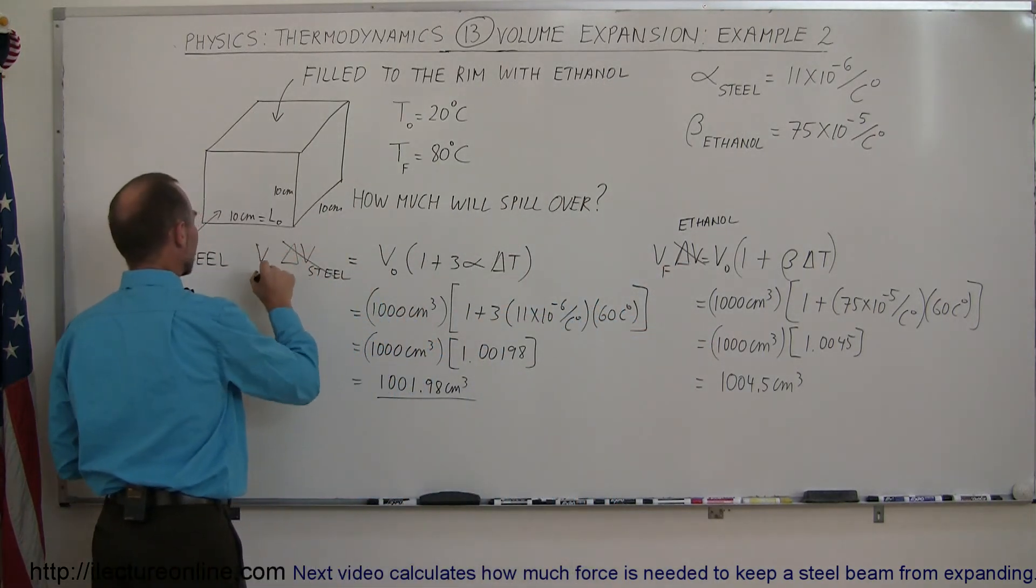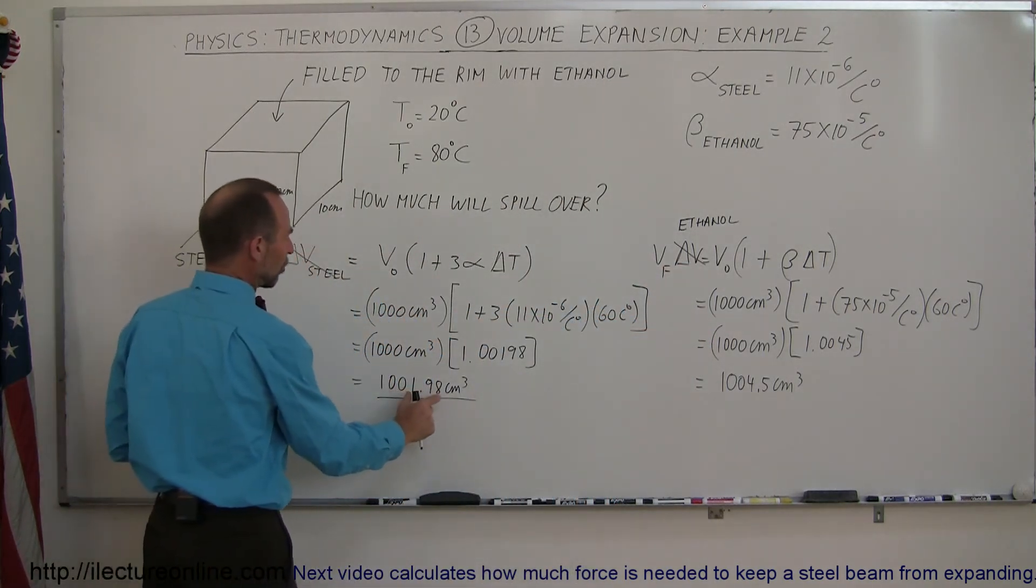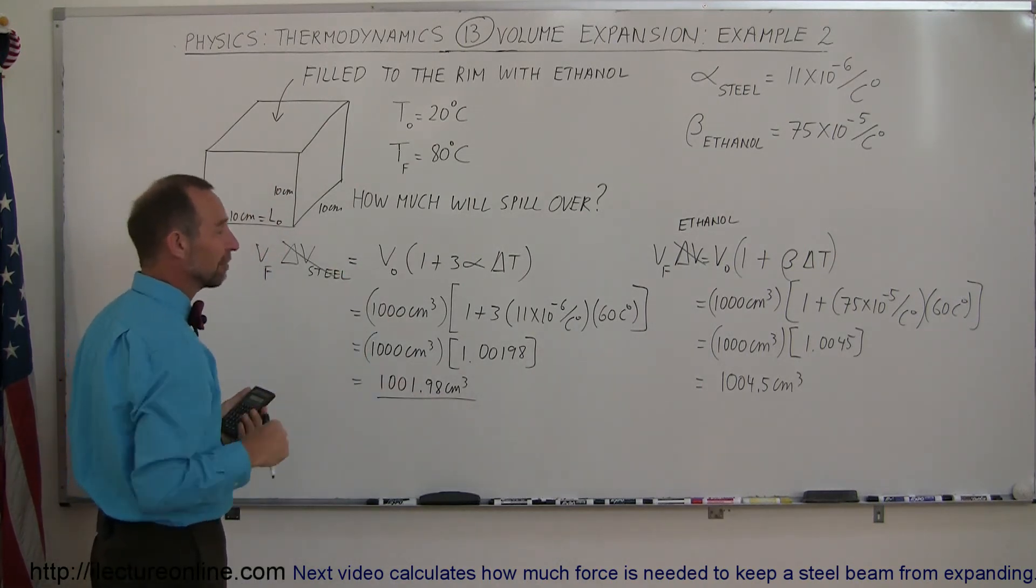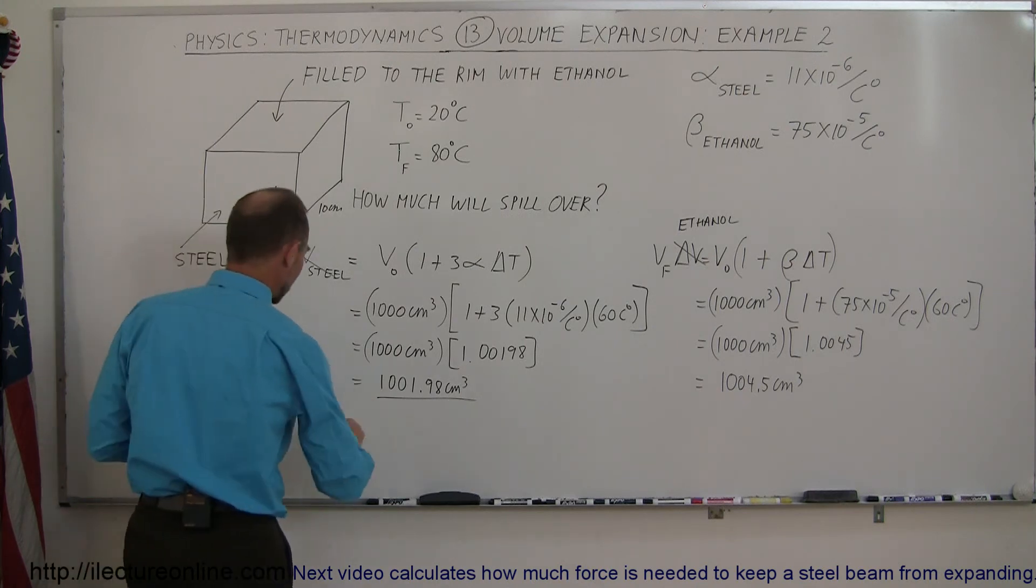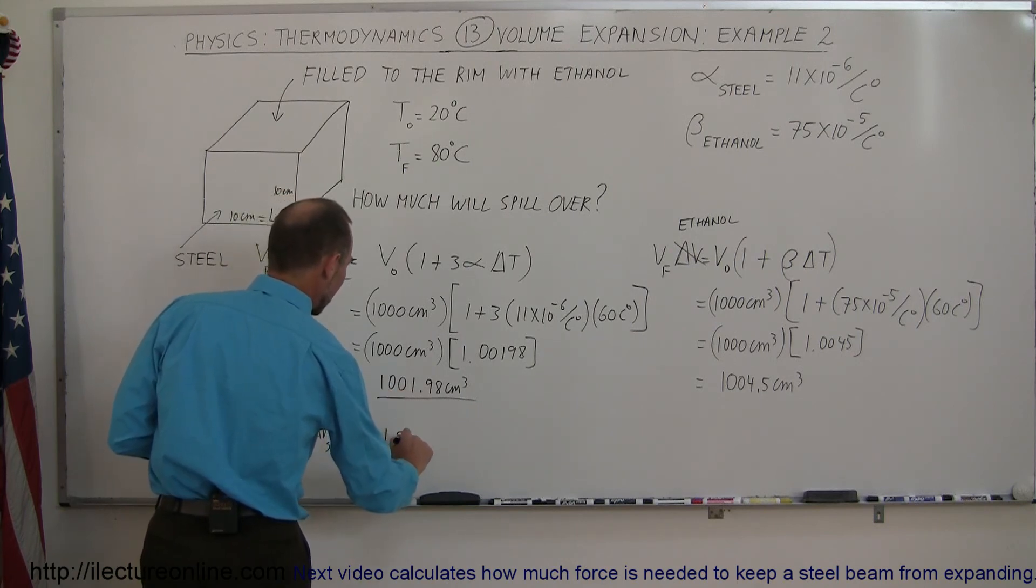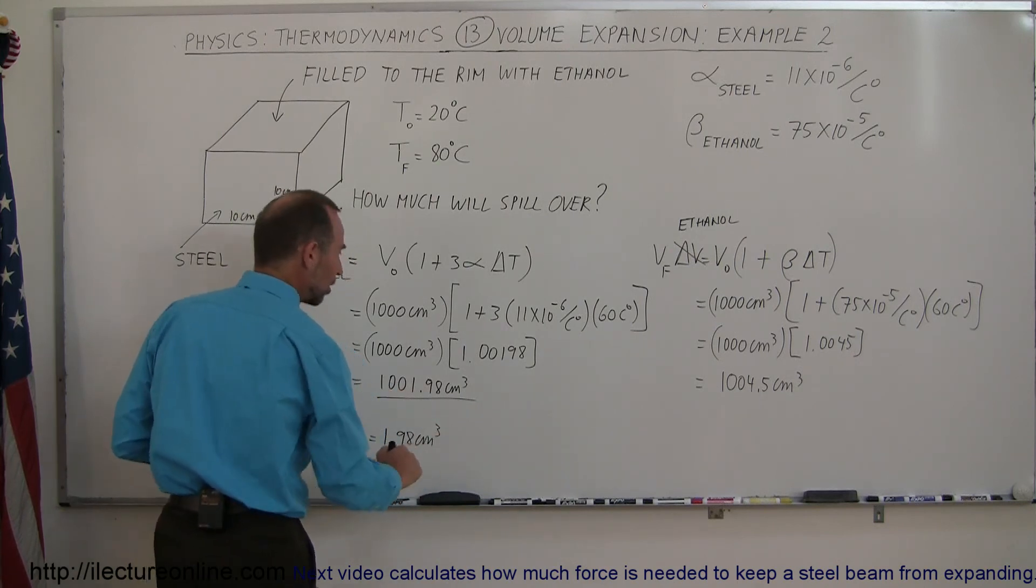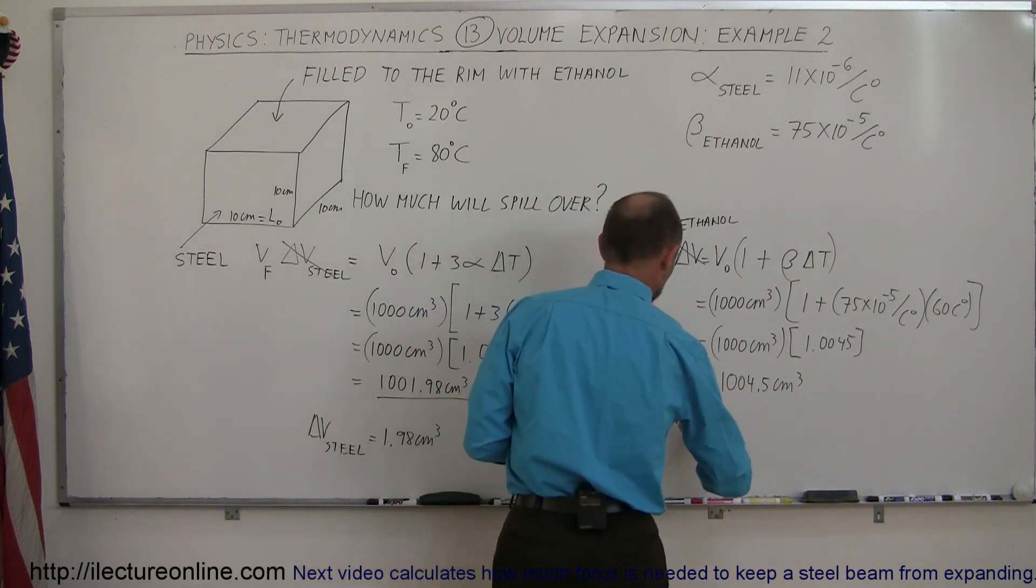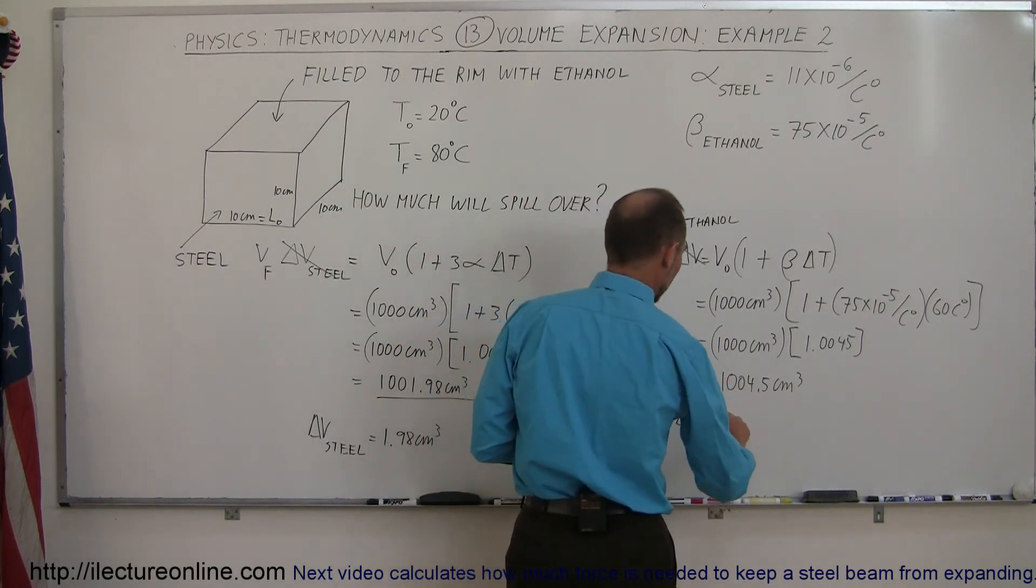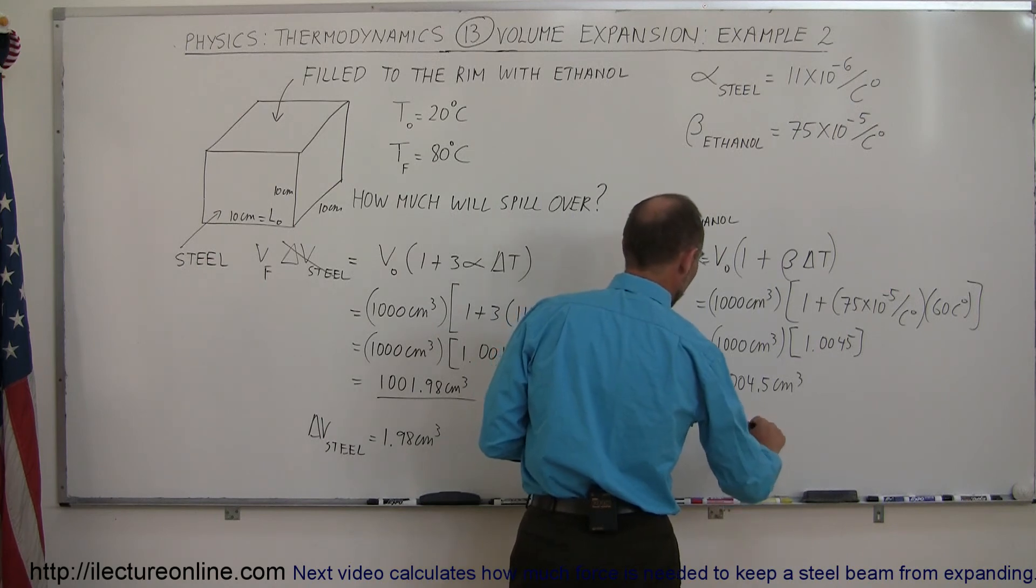So I really also now realize I'm not giving you the change. I'm actually giving you the final volume. To get the change, I should have subtracted it from the final volume. But we can then see that the delta V here for the steel is equal to 1,000 minus this, or 1.98 cubic centimeters. That's the change here. And here you can see that the change, the delta V, is the difference between this and 1,000, or 4.5 cubic centimeters.